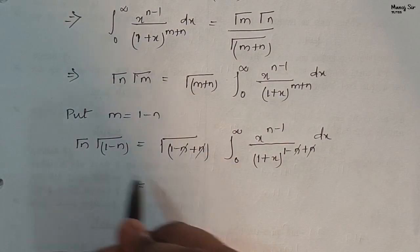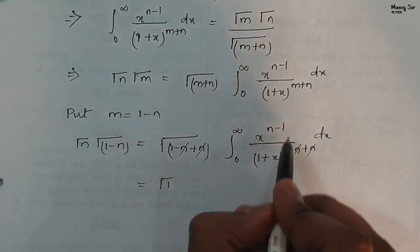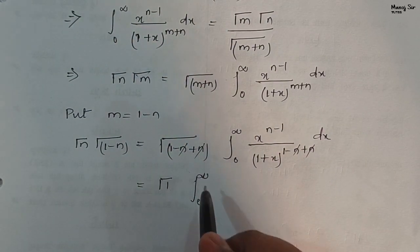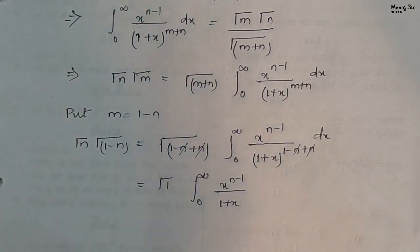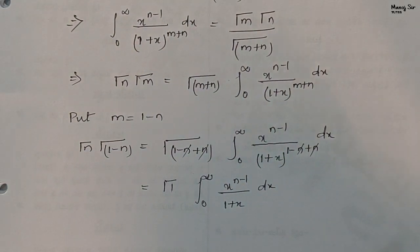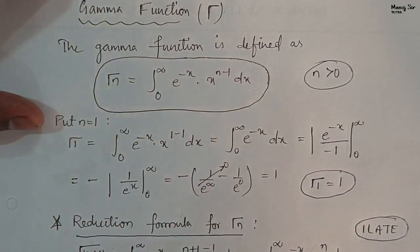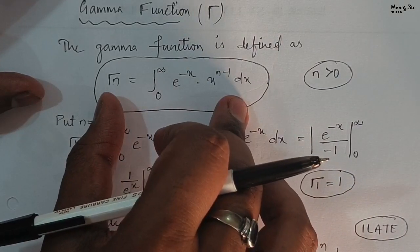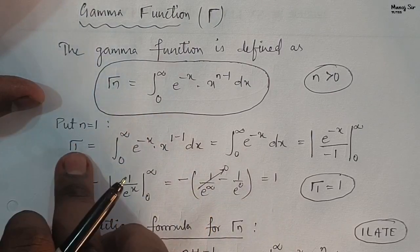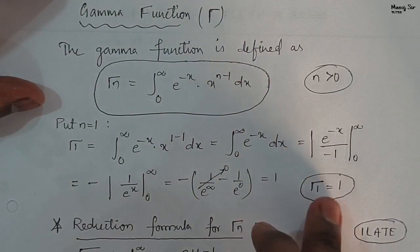So we have gamma(n) gamma(1 minus n) equals gamma(1) times the integration from 0 to infinity of x to the power n minus 1 upon 1 plus x to the power 1 dx. In video number 20 we discussed the gamma function in detail and found that gamma(1) equals 1. So putting gamma(1) equals 1 we get this part.